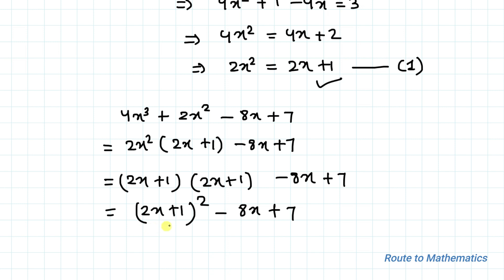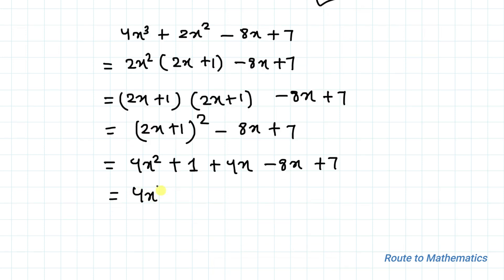Now applying the (a + b)² algebraic identity, we expand (2x + 1)² to get 4x² + 4x + 1. So the expression becomes 4x² + 4x + 1 - 8x + 7, which simplifies to 4x² - 4x + 8.